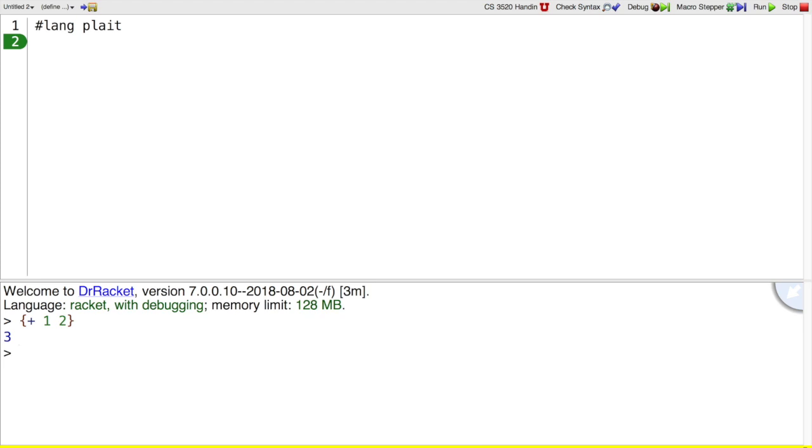But what we can do is write plus one, two, but then put a back quote in front of it. That gives us an S expression that has the same information as the literal text curly plus one, two.